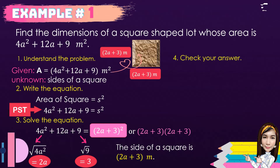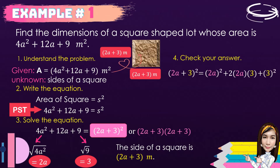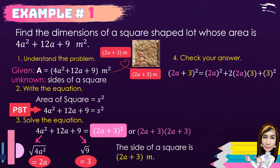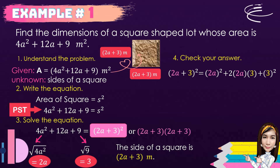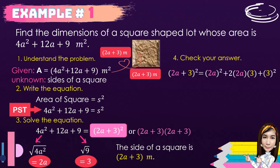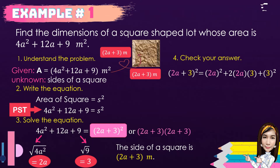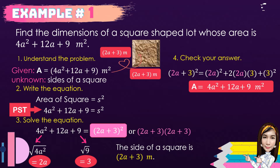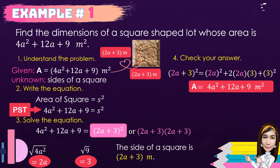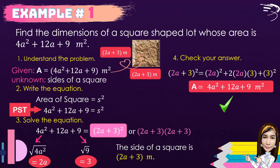To check if the answer is correct, we use the special product. Given (2a + 3)², we square the first term, add twice the first term times the second term, plus the square of the second term: (2a)² + 2(2a)(3) + 3² = 4a² + 12a + 9 square meters, which is the area of our square. So we got it correct.